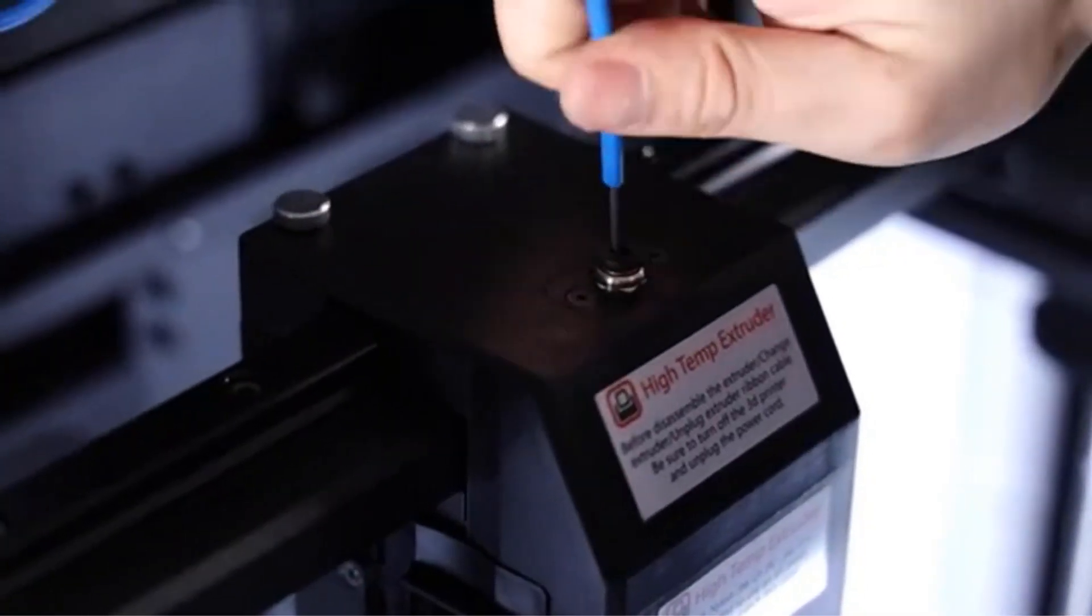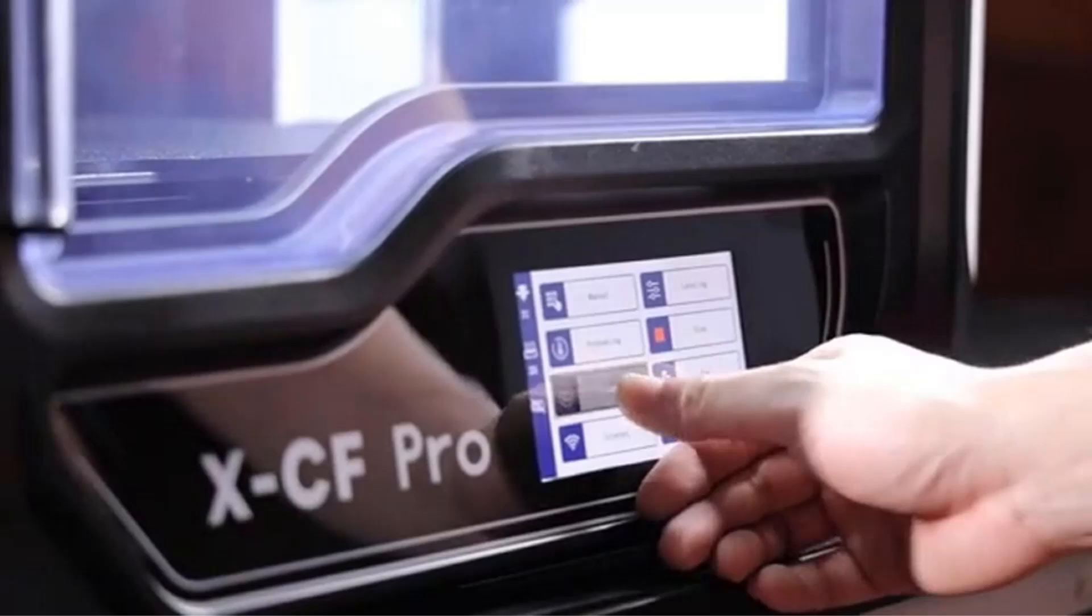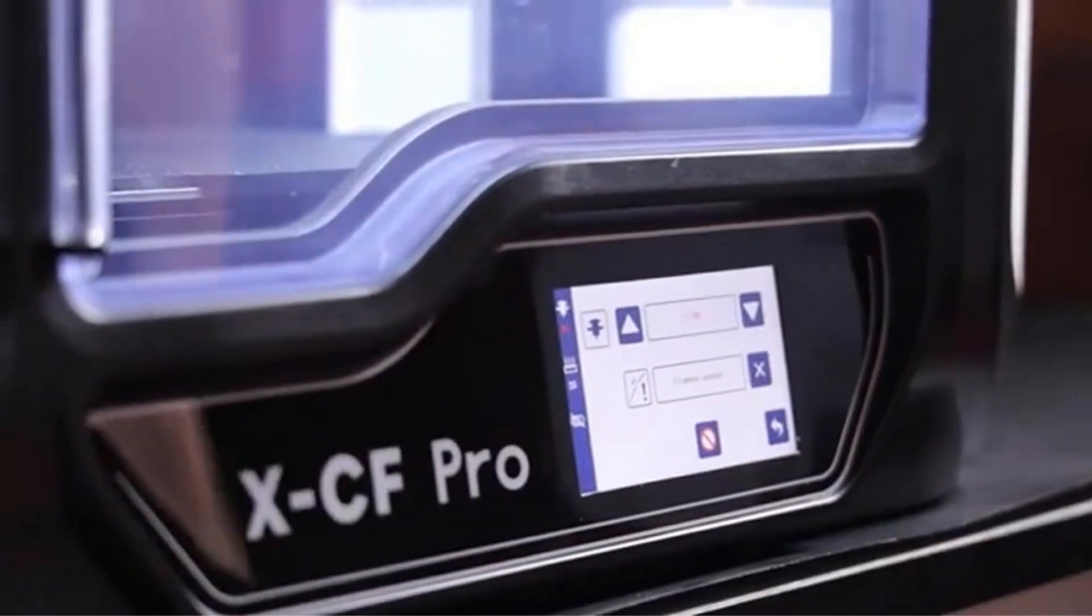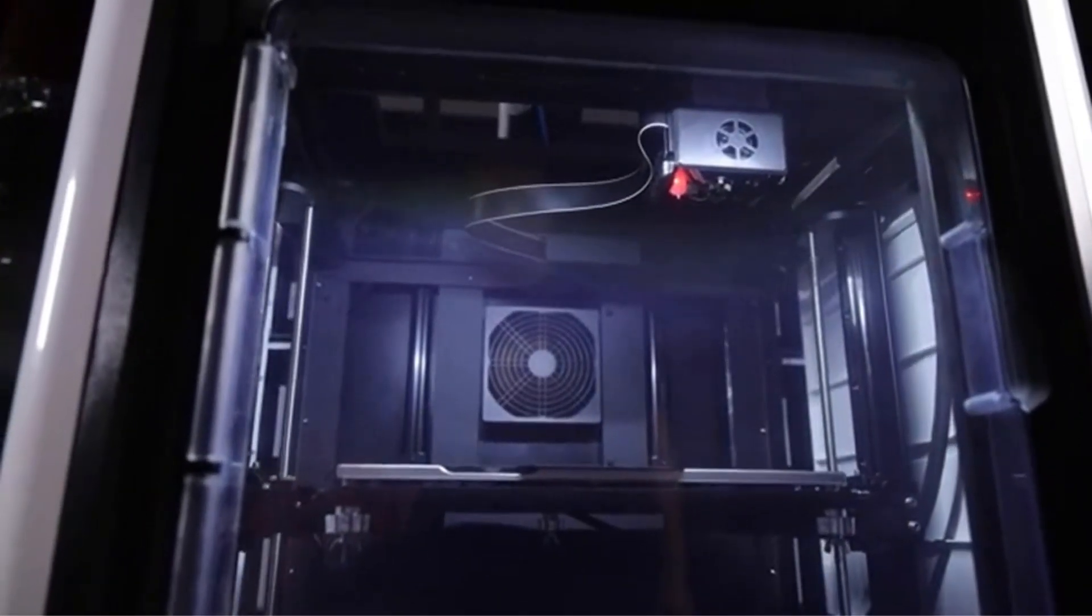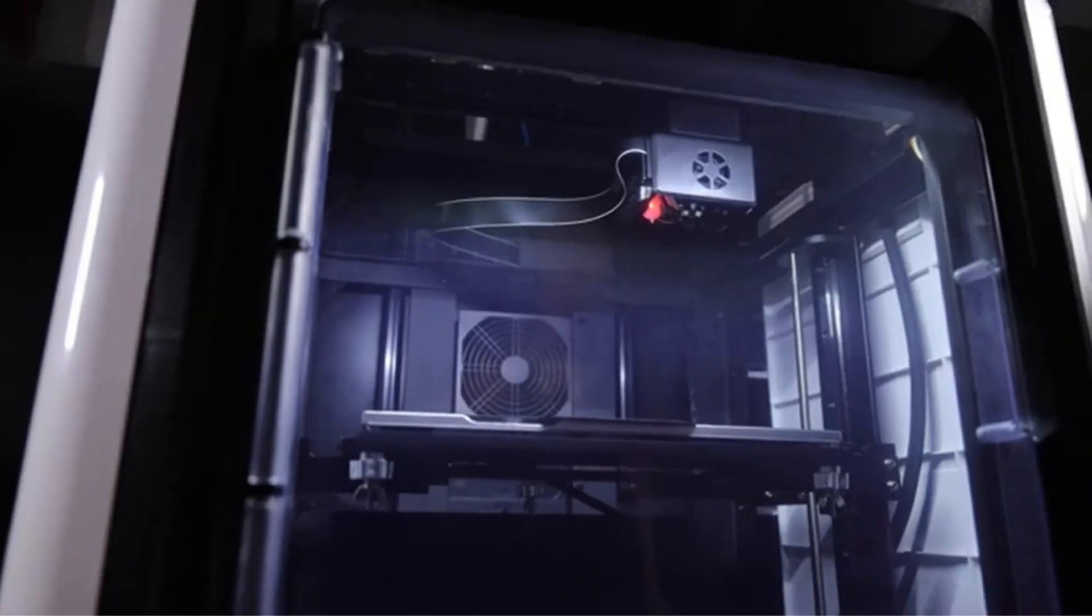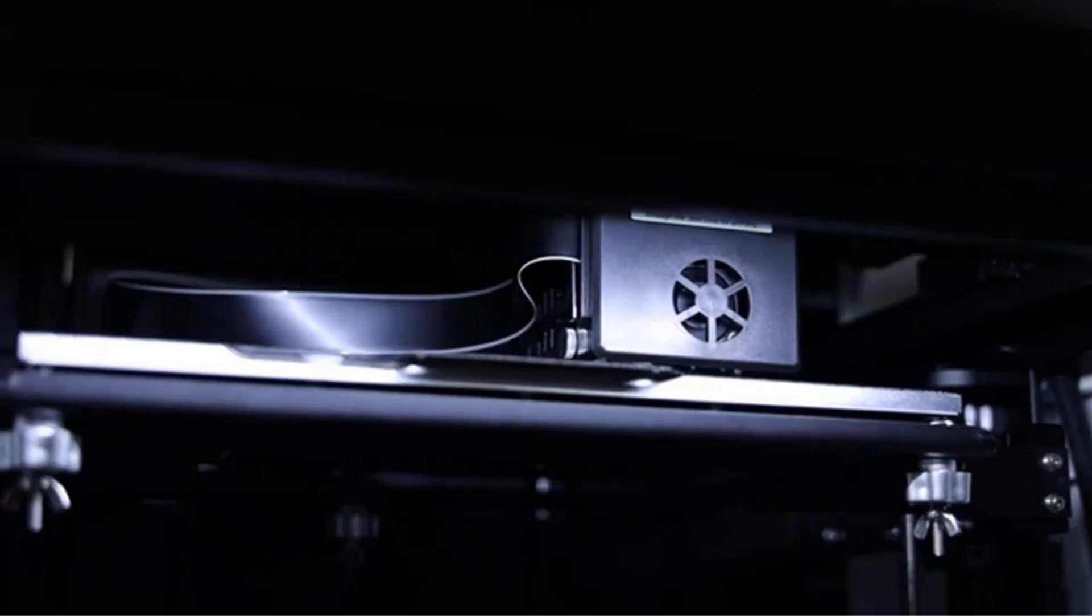The heated glass build plate makes for stable builds, and the automated leveling ensures a minimal human component. If you invest in the S5's additional Rubicon print core nozzle, the quality is maximized for the best results.